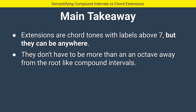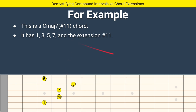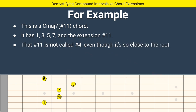Extensions are chord tones that are above seven — they don't have to be more than an octave away from the root like compound intervals do. For example, this is a C major seven sharp 11 chord. It has a root, a third, a fifth, a seven, and a sharp 11. So it is spelled: one, three, five, seven, and the extension sharp 11.